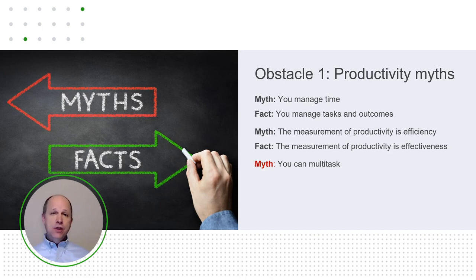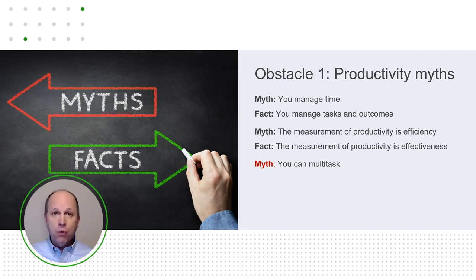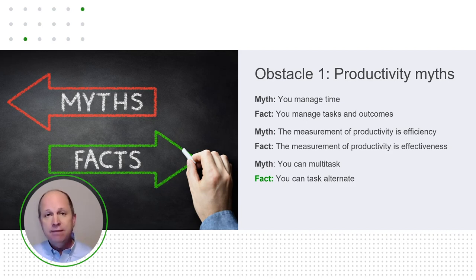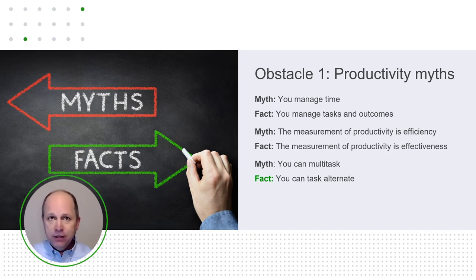Another myth: you can multitask. But you can't multitask. It's proven by psychologists and psychiatrists that the mind can only focus on a single thing at one time — you can only think one thought at a time. We get so good at task oscillation or task alternation that we begin to deceive ourselves and others into believing we can actually do two things at the same time. Studies have proven that when you oscillate or alternate between tasks, however rapidly or fluidly, effectiveness is diminished, and often efficiency along with it.